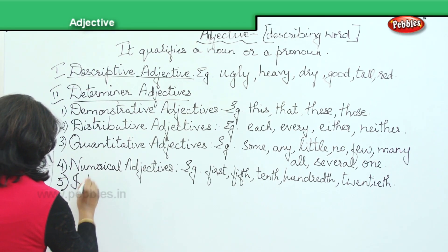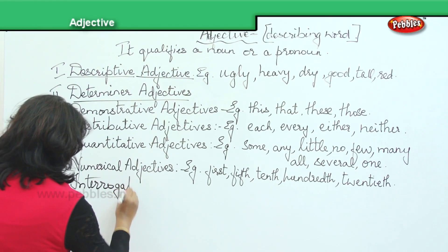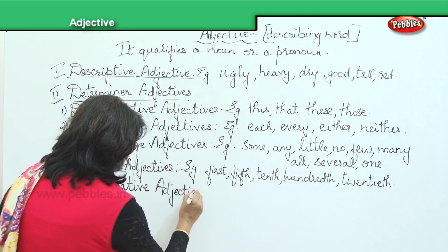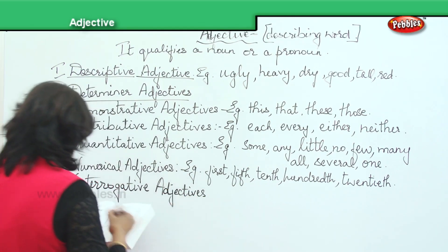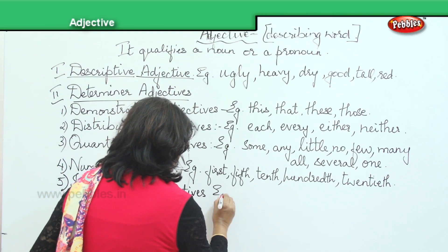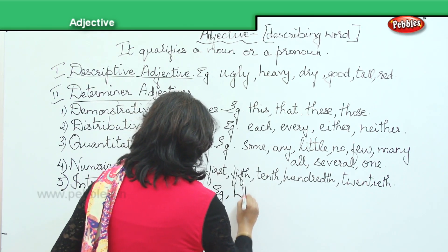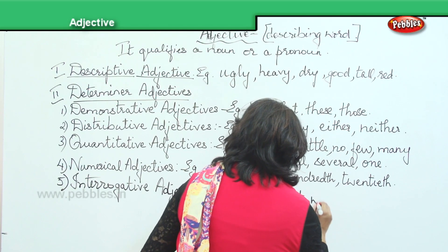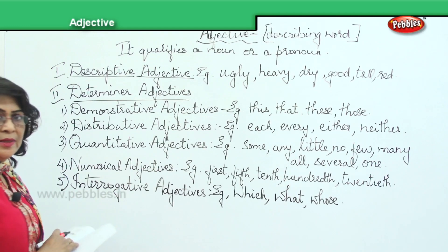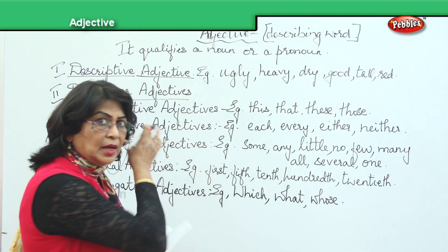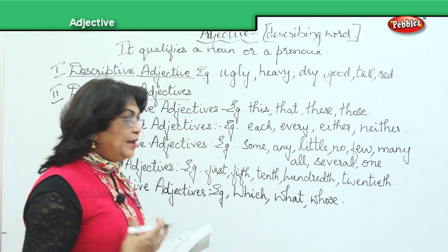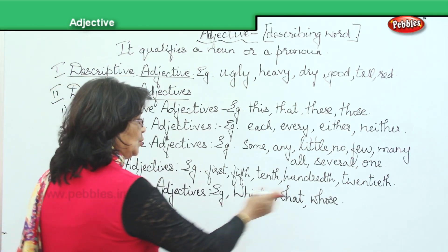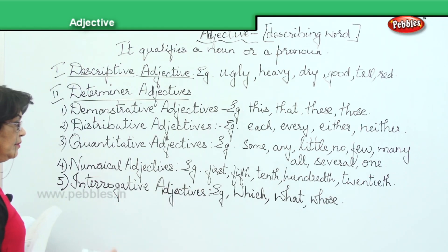Interrogative adjectives — the examples are which, what, and whose. These three are interrogative adjectives. For example: 'That is the house in which my parents stayed,' 'That is the person whose mother is a good friend of mine.' So which, what, and whose are all interrogative adjectives.